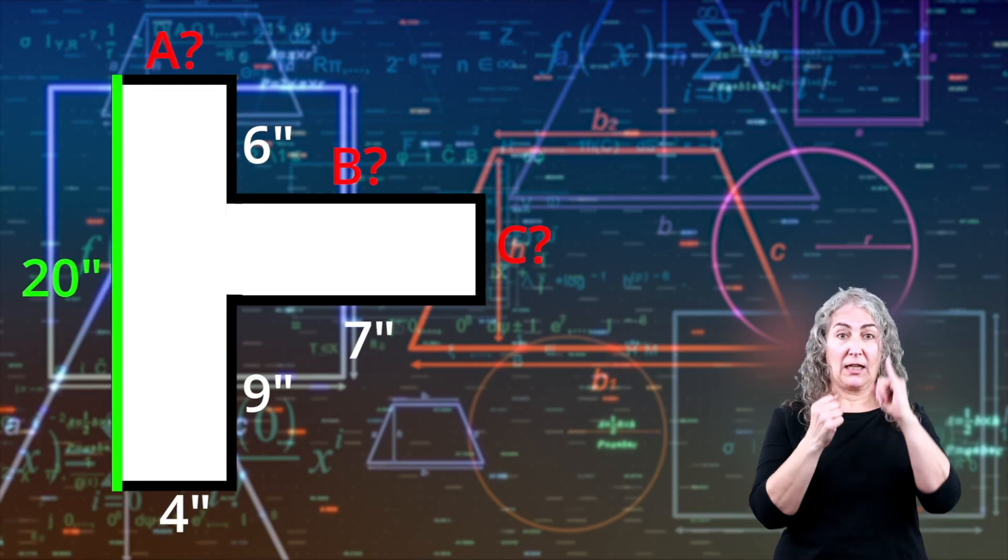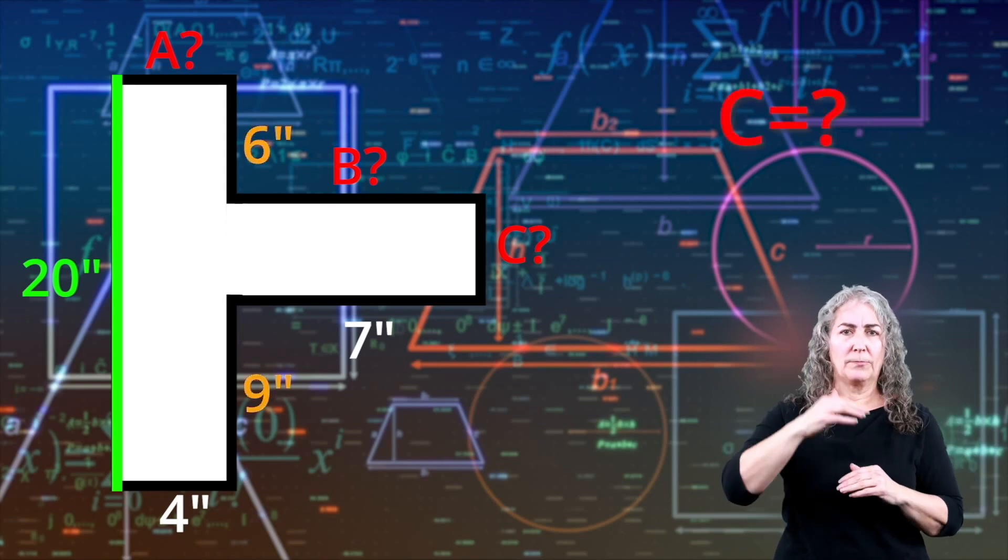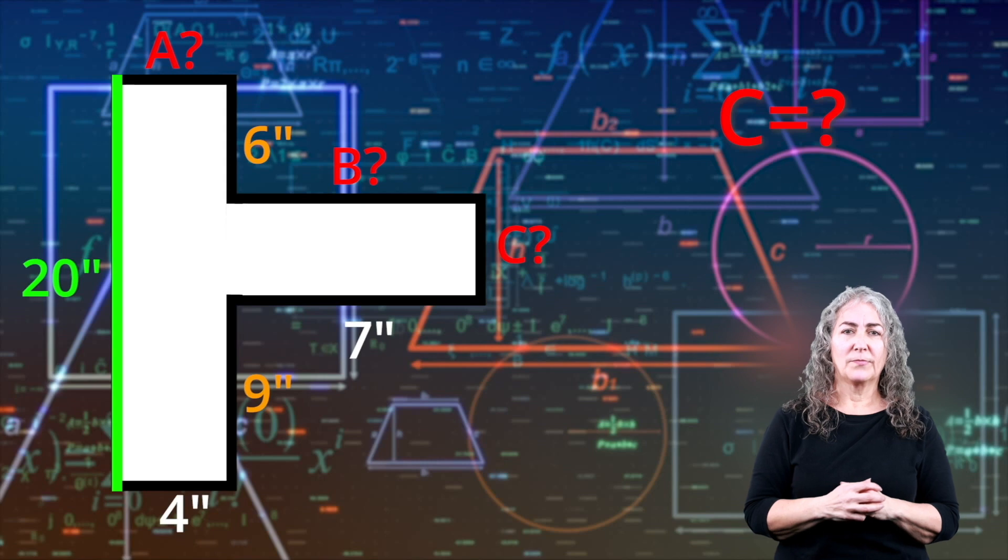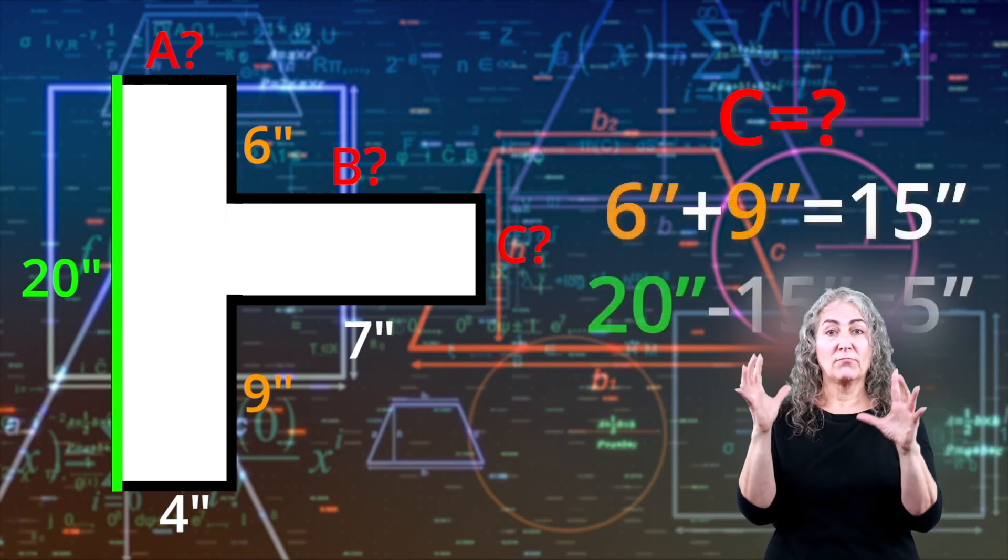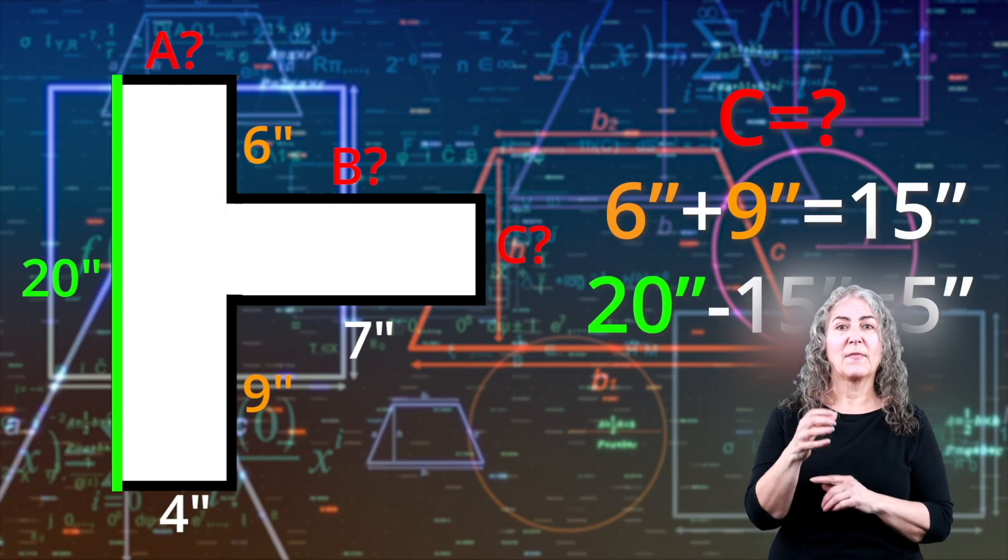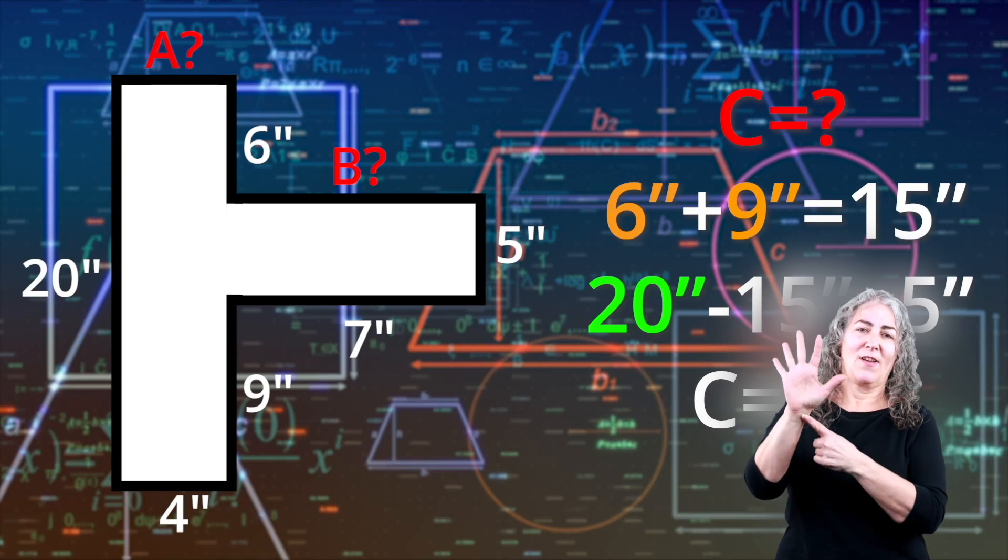Check it out. The length of the green line is 20 inches. This will help you find the length of C. First, we add the other two lengths together, 6 inches and 9 inches, to get 15 inches. Then, we subtract 15 from 20 to get 5. So, the length of line C is 5 inches.